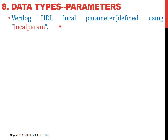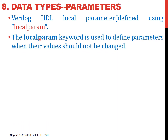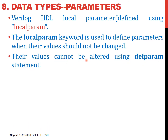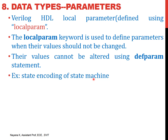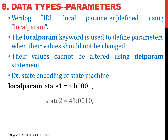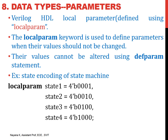Verilog also allows parameters whose values cannot be changed, using local parameters with the keyword localparam. If you declare a constant using localparam, you cannot change its value using any statement, unlike regular parameter — the values cannot be altered using defparam statements. An example use case is state encoding for state machines, where states are constant values you do not want to change. For instance, state1, state2, state3, state4 can each be assigned a 4-bit value using localparam.